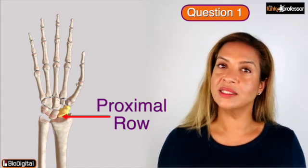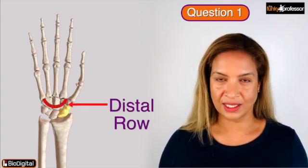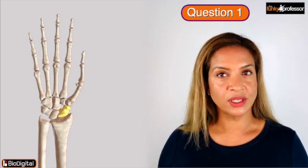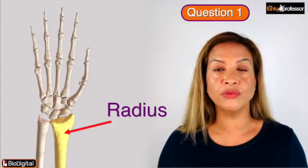a proximal row, which is closest to the forearm, and a distal row, which is closer to the hand. The scaphoid is in the proximal row and it therefore articulates with the radius bone of the forearm.